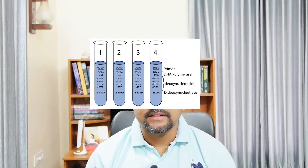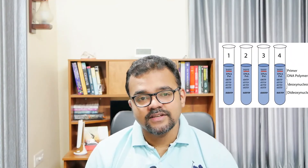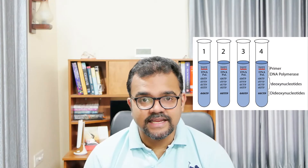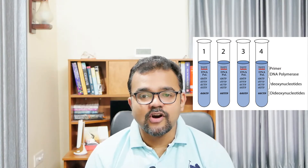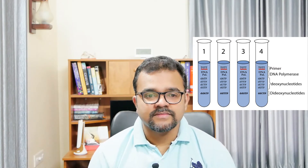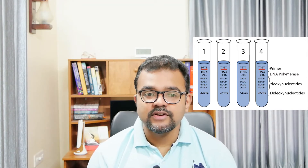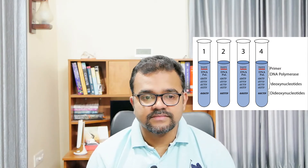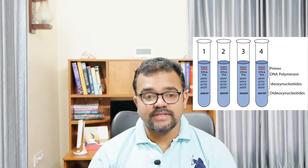The components are: a short primer; a pure single-stranded DNA template; one of the 4 dideoxynucleotide terminators, that is either ddTTP, ddATP, ddGTP or ddCTP; the 4 dNTPs, some of which are P32-labeled in each reaction mixture; and a DNA polymerase without 5' to 3' exonuclease activity.